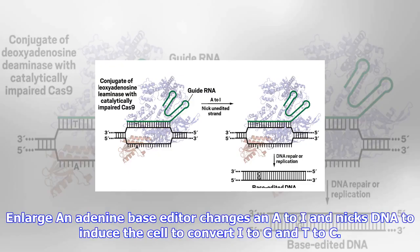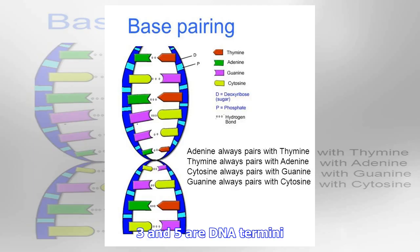An adenine-based editor changes A to I in nicked DNA to induce the cell to convert I to G and T to C at 3' and 5' DNA termini. Many diseases, such as sickle cell anemia, are caused by single-base mutations in genomic DNA.